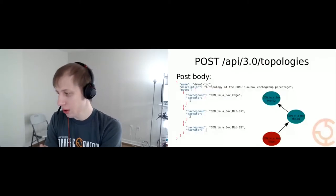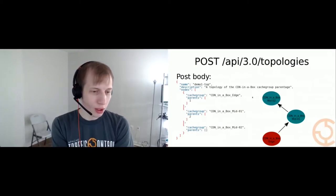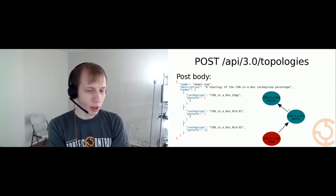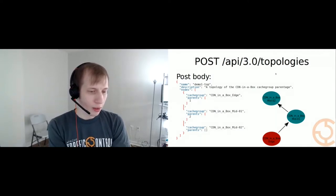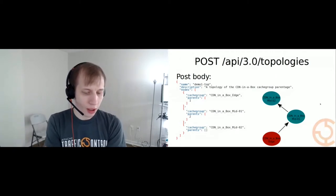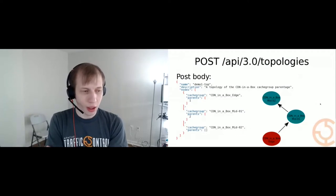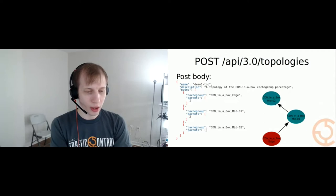So, a topology — Jeremy is going to go into this in more detail. You see the red here — this is an edge. The blue and teal ones are our mids. We have a test environment in the project called CDN in a Box, and this is the topology that is there. Notice there are two mids and three tiers here. That's just one thing you can do with topologies.